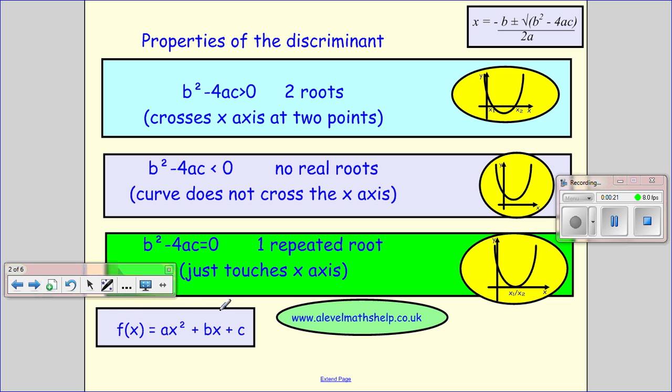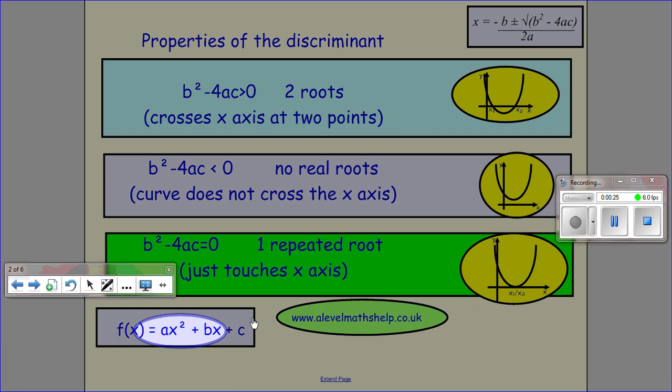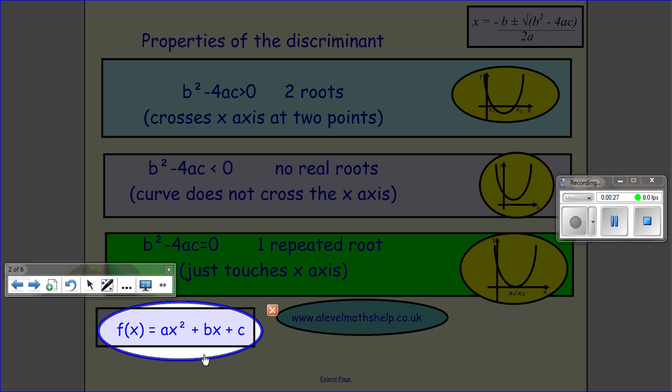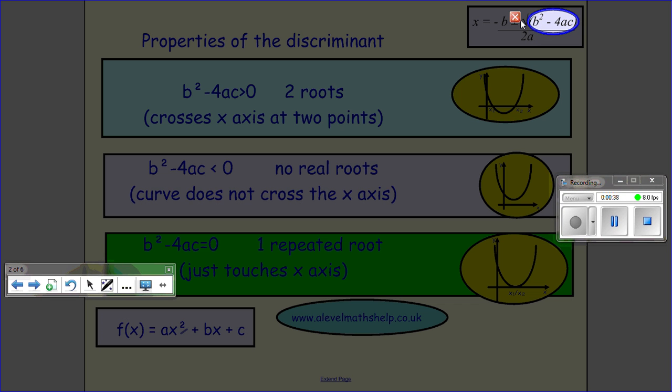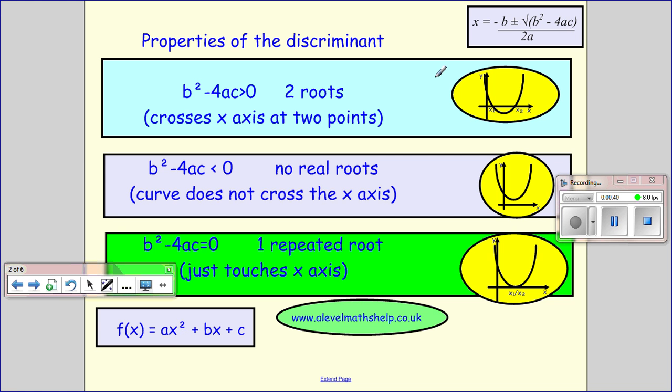Okay, so to start with, our quadratic function is given by f(x) = ax² + bx + c, and it's quadratic because the highest power of x is 2. The discriminant is the bit in the square root of the quadratic formula equation, that's b² - 4ac.